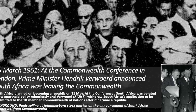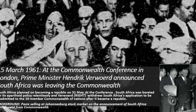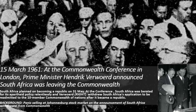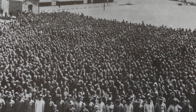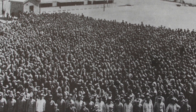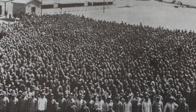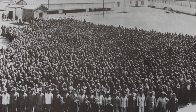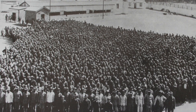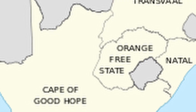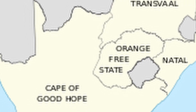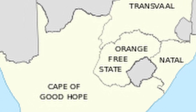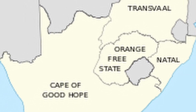The name Transvaal was finally changed in 1994, when the post-apartheid African National Congress dominated South African government broke up the province into four provinces and renamed the core region Gauteng.